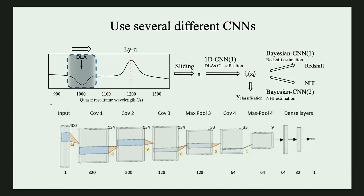In our research, we are using several different components to do DLA classification, redshift, and column density estimation separately. In this case, we can optimize each component to get the best performance. For an input quasar spectrum, we first use a sliding window to cut it into many pieces. For each piece, we use a 1D CNN to do the DLA classification, and the final classification result is made by an ensemble decision of those many pieces.